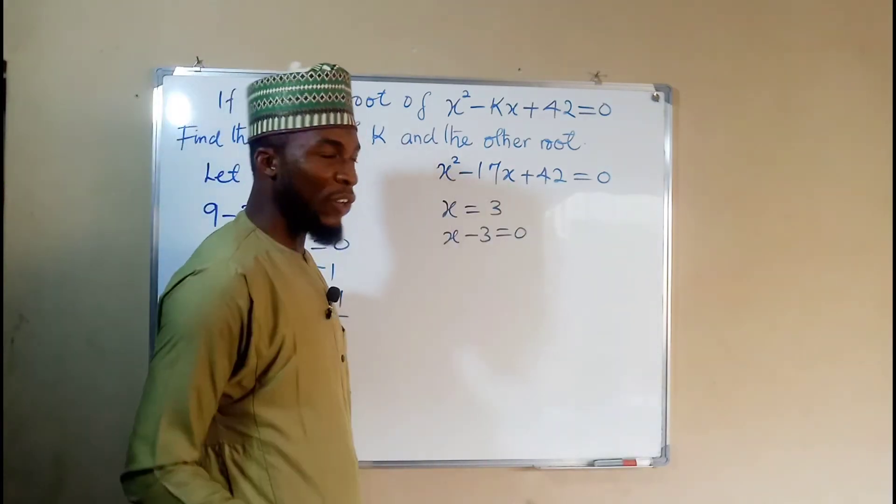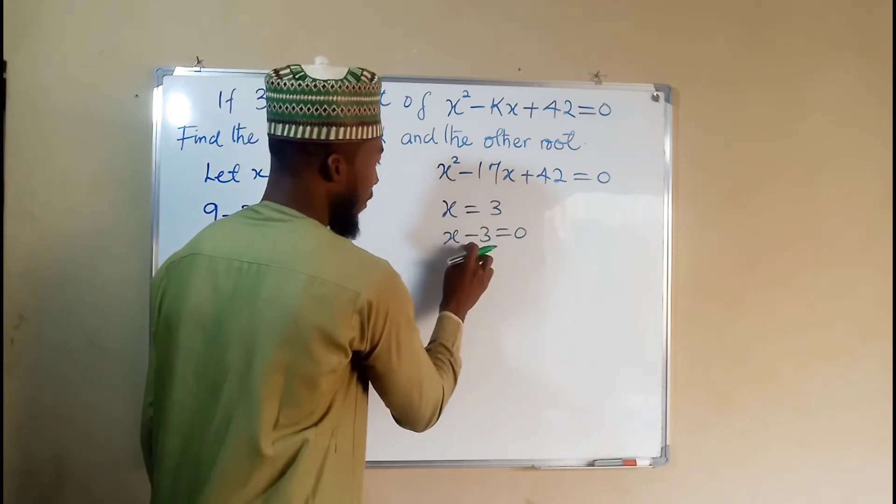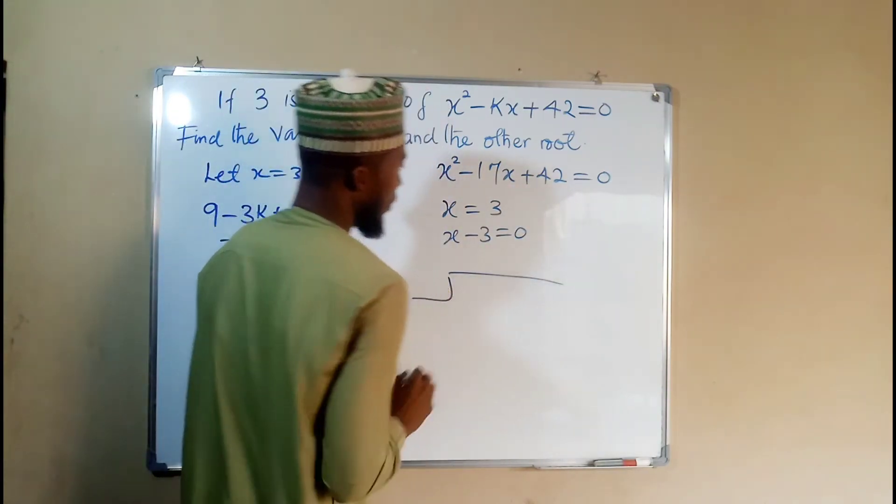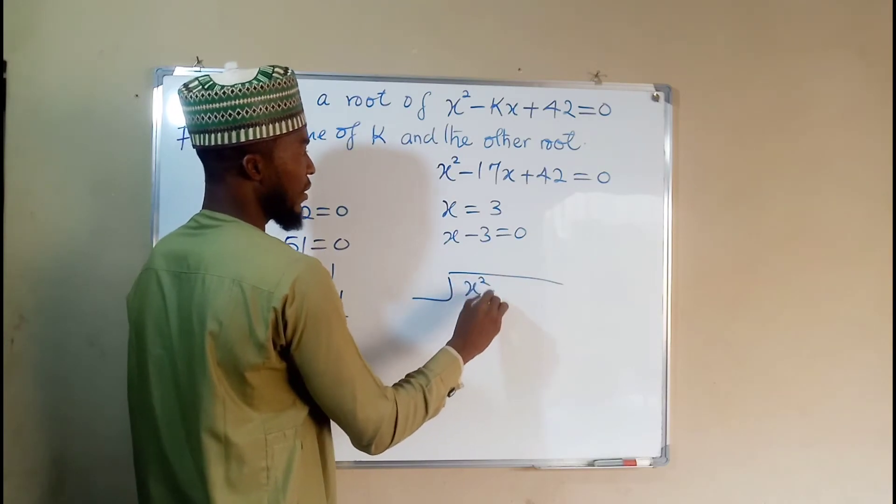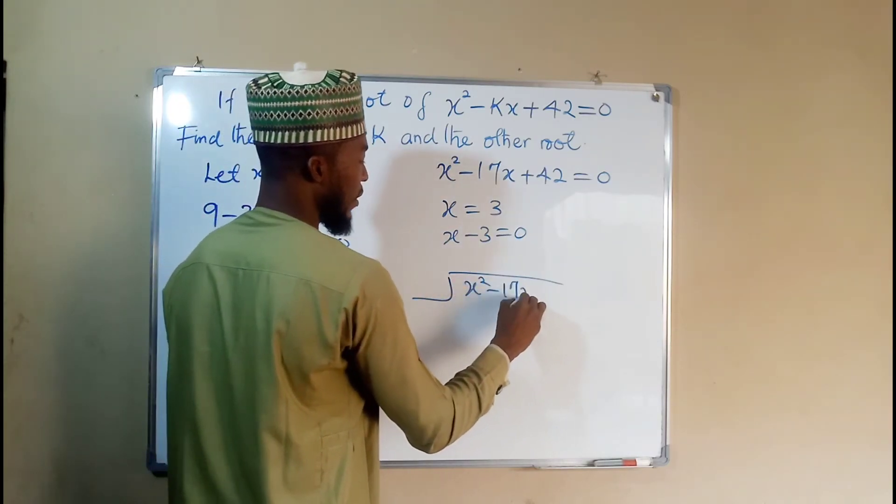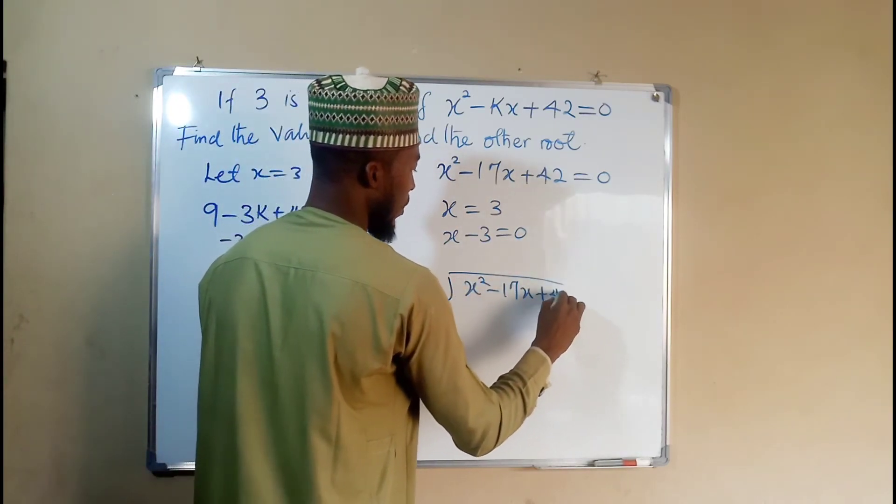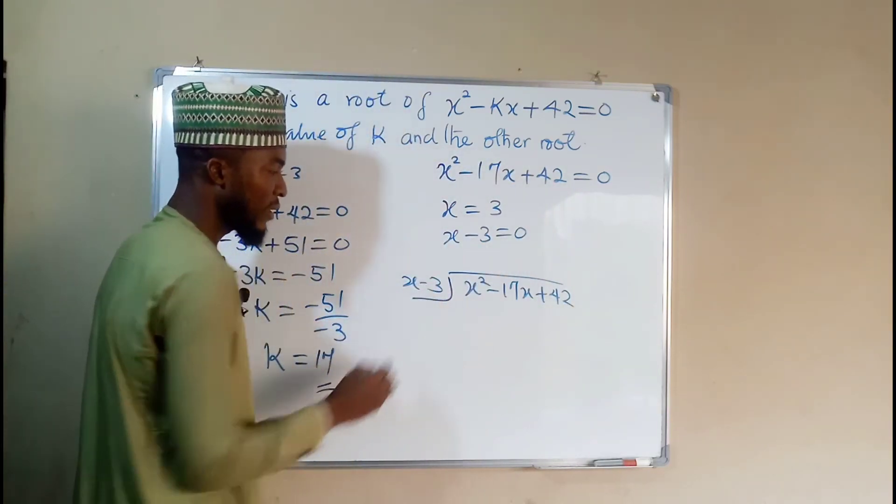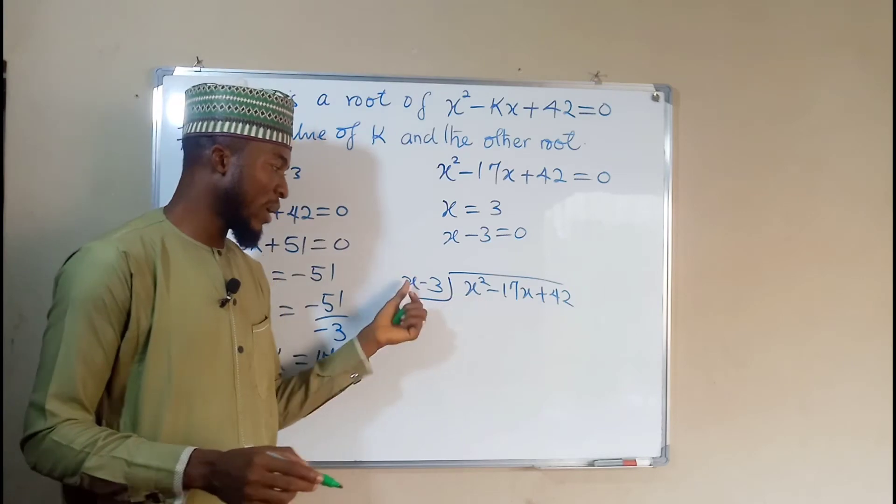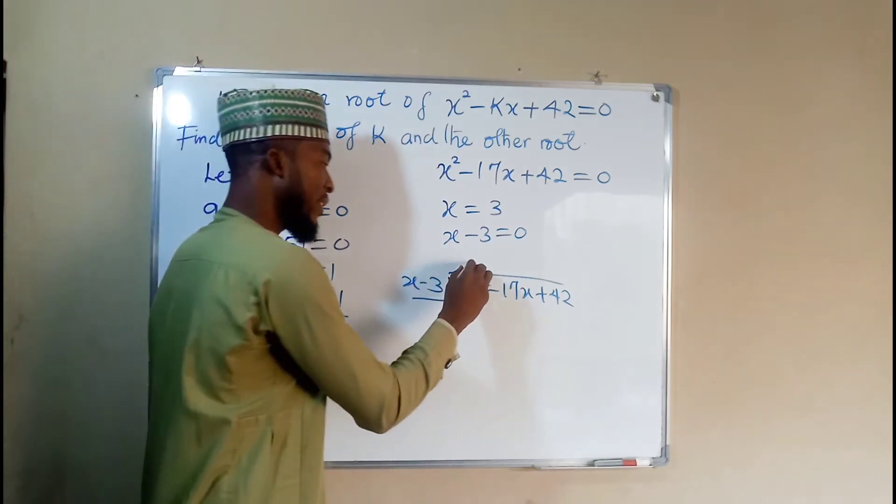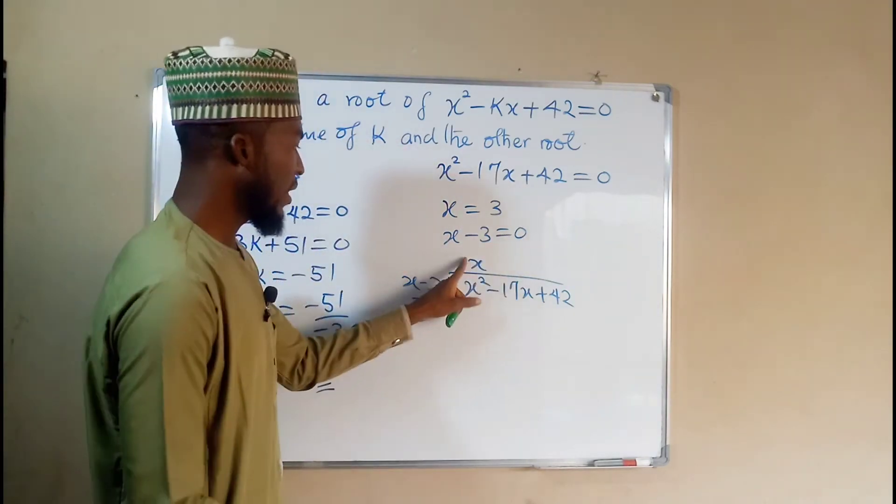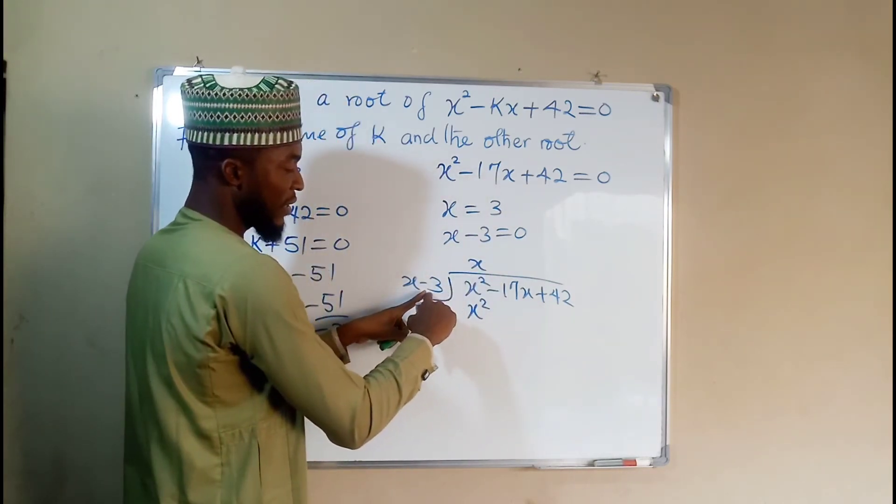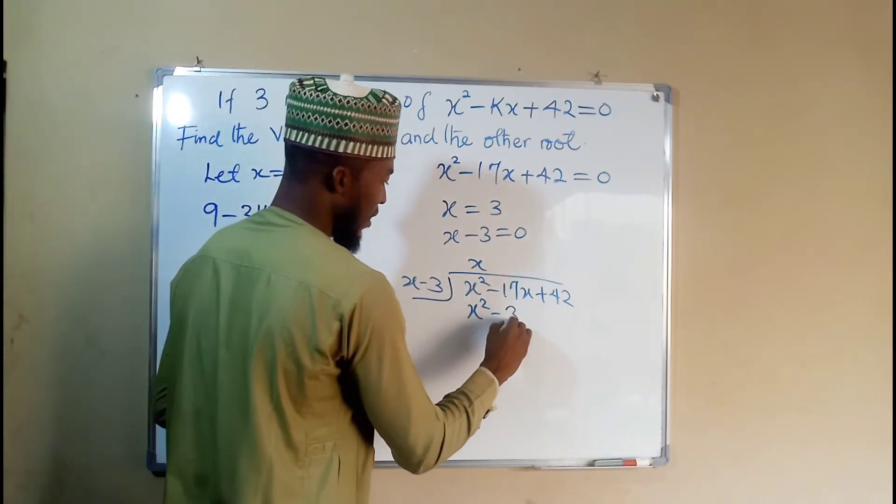Now to obtain the other factor, we can say this divided by this using long division. Inside we have x squared minus 17x plus 42. And outside we have this factor x minus 3. We say x squared divided by x, it will give us x. Then x times x is x squared. Then x times negative 3 is negative 3x.